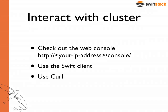The way the client is built, it's using features built into Swift — a JavaScript library that speaks the Swift API. It uses features like form posts and Temp URL so that you can, from the browser, directly post into the Swift cluster and upload cat pictures.